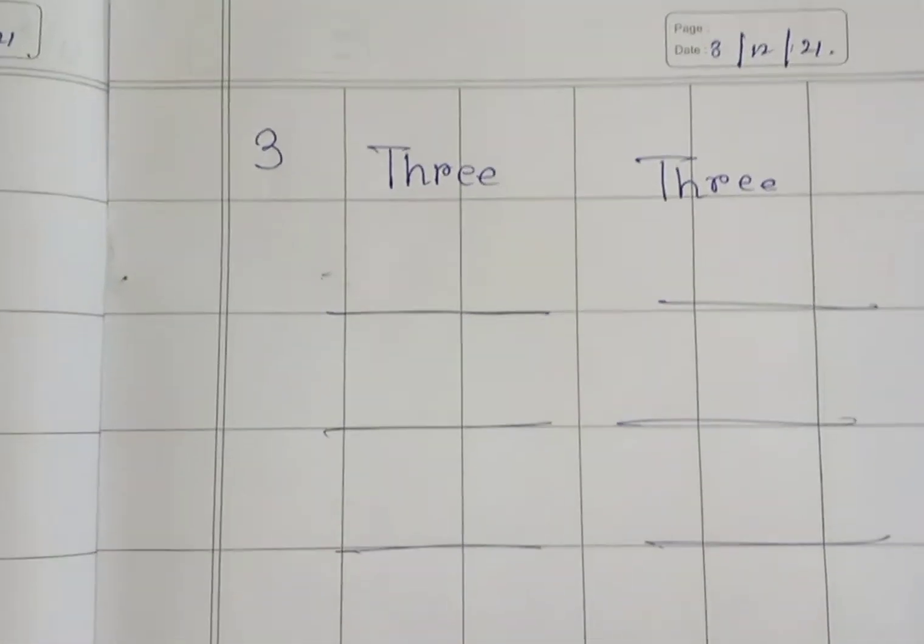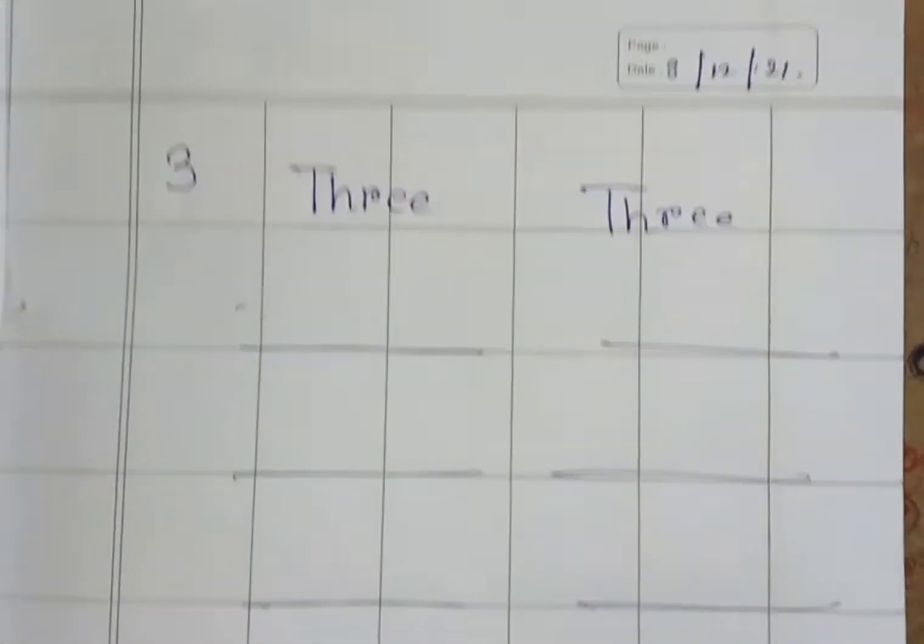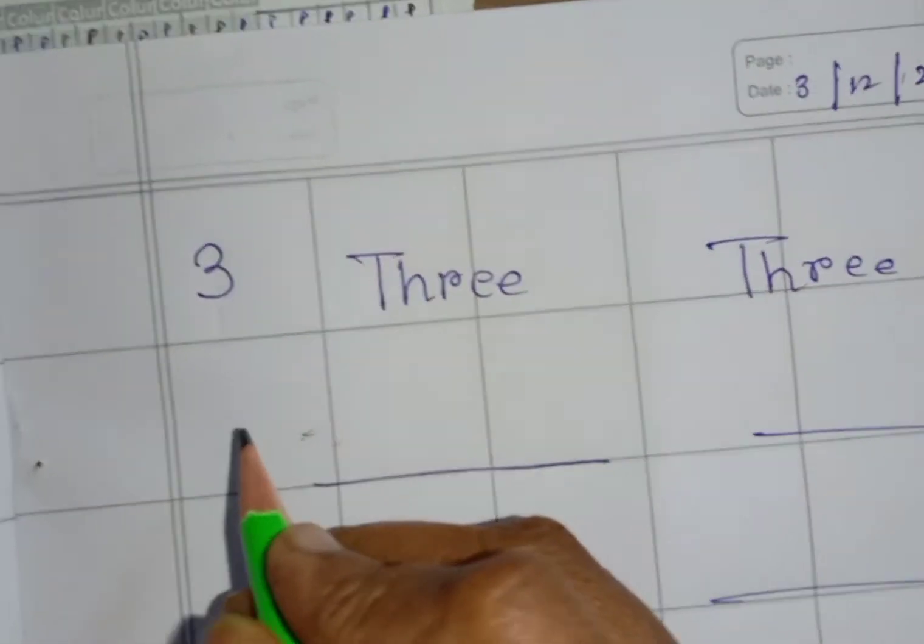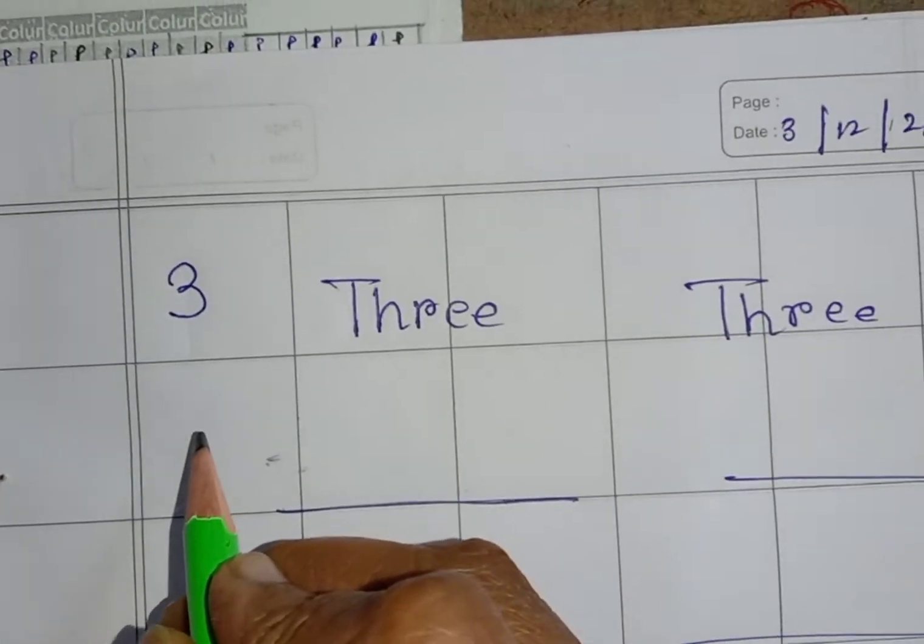Look children, this is your math class copy. So we will write number 3 and spelling of number 3. Now start children.